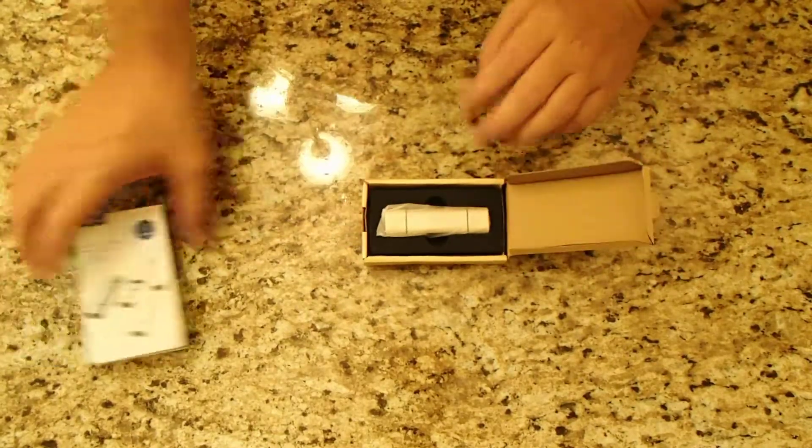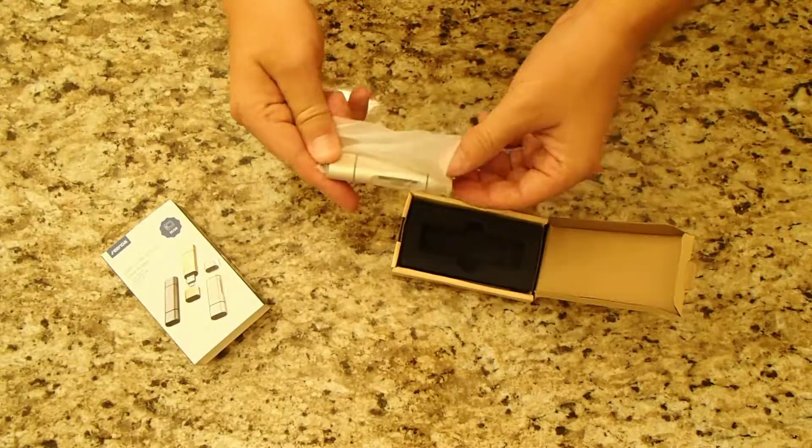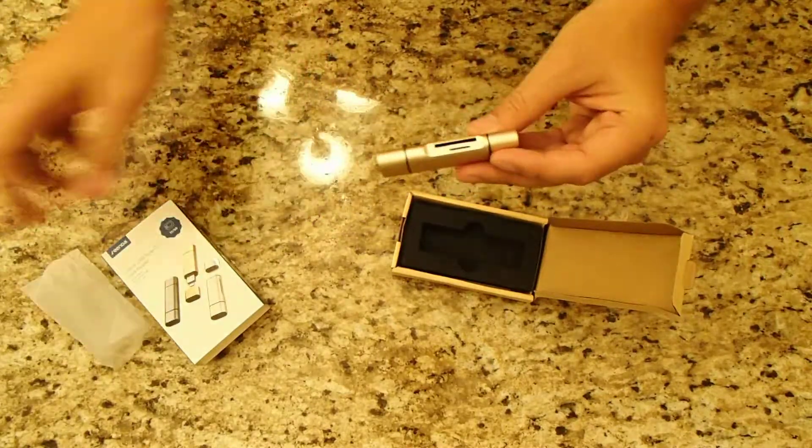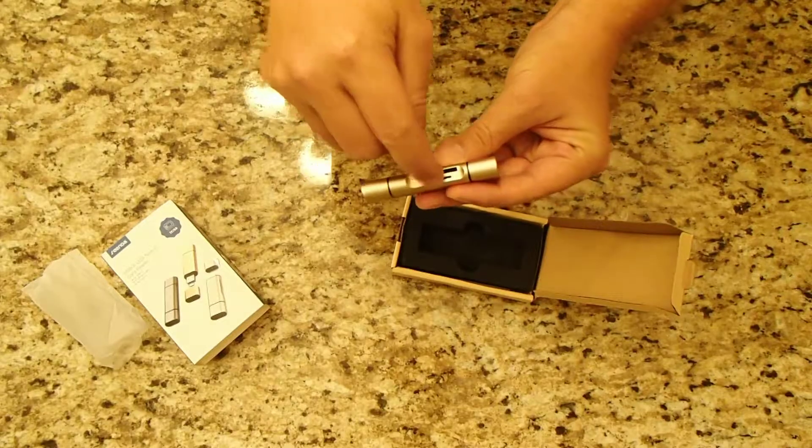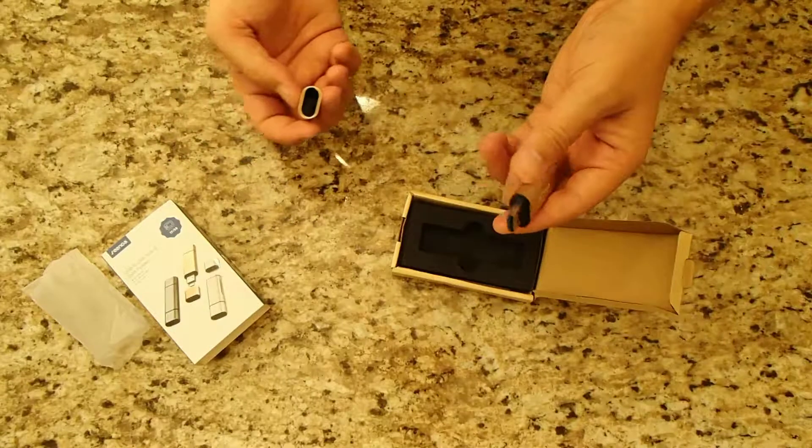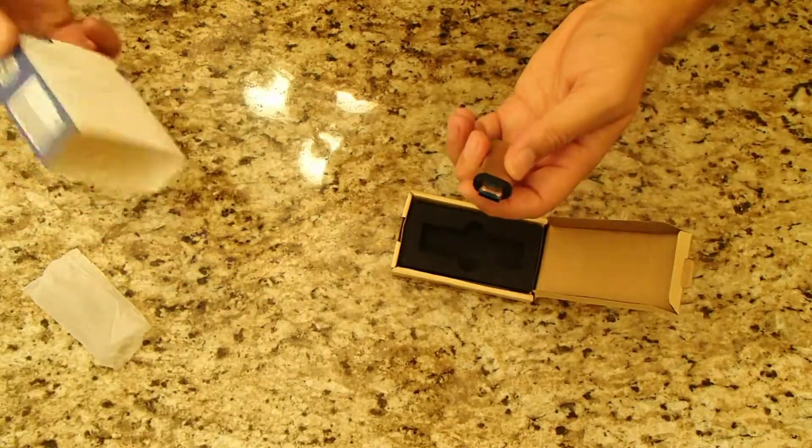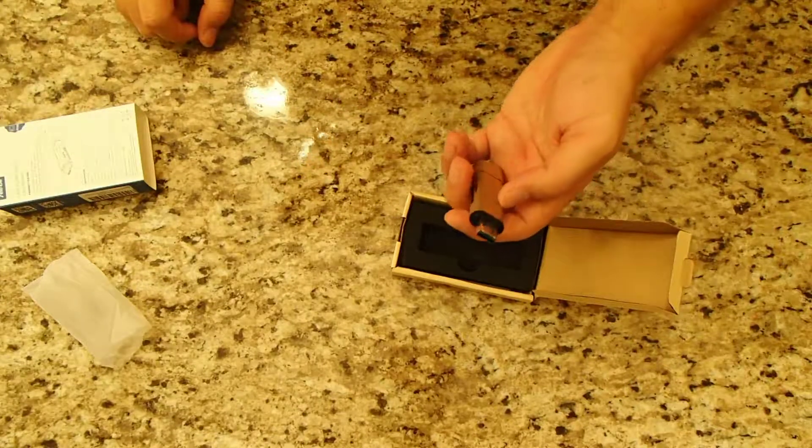Inside the box, you've got a nicely wrapped micro and regular SD card reader. There's the SD card slot, micro card slot. There is your USB slot. Now this is a USB-A. It's blue, so I think that would indicate a USB 3.0.